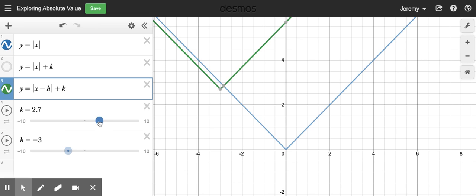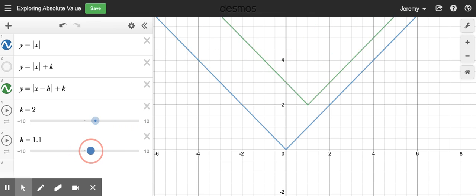Then my k value causes a vertical translation. Let's say I'll just say like two units.